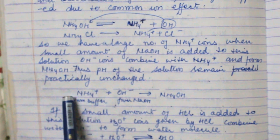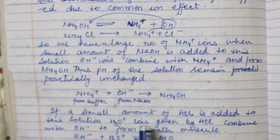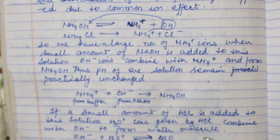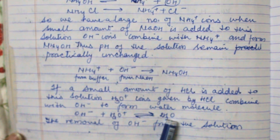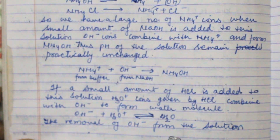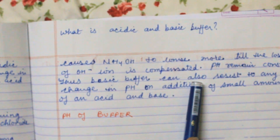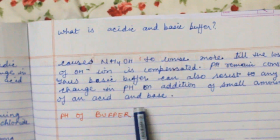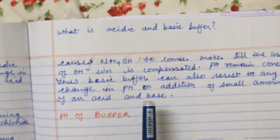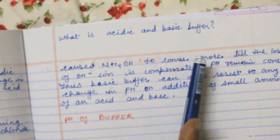If a small amount of HCl is added to the basic buffer solution, the hydronium ions from HCl combine with OH⁻ ions to form water. The removal of OH⁻ from the solution causes NH4OH to ionize more, until the loss of OH⁻ is compensated and pH remains constant. Thus a basic buffer can also resist any change in pH on addition of a small amount of acid or base. In both acidic and basic buffers, pH doesn't change because of the common ion effect. The question for today is: what is an acidic and basic buffer?